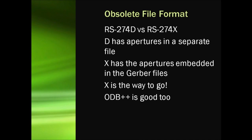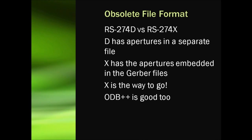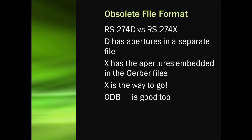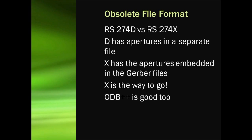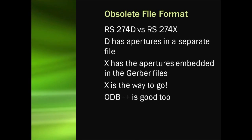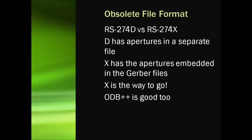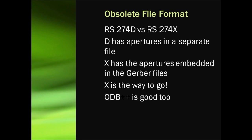Number one: obsolete file format. RS274D is a common format that's been out there for a long time. In the D format, apertures come in a separate file, and we have to upload those separately and manually manipulate them often.